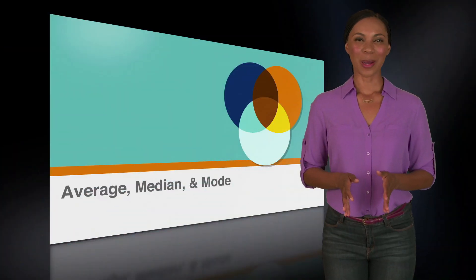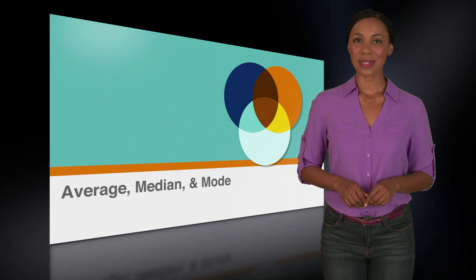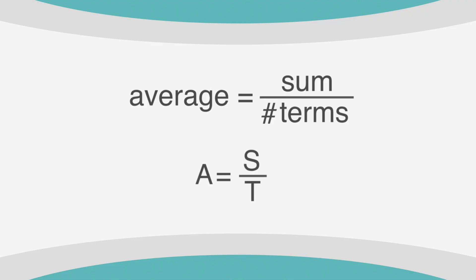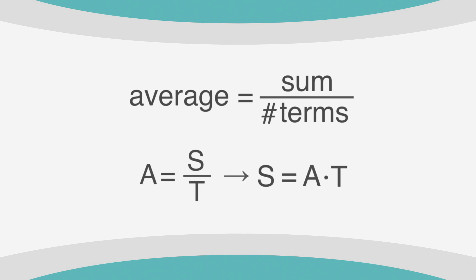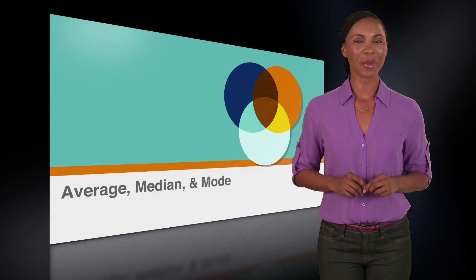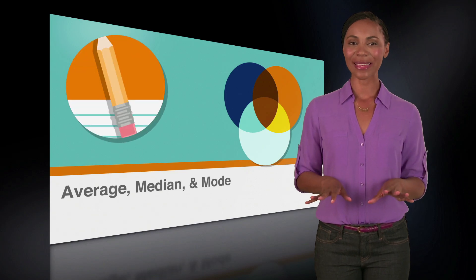To solve SAT problems, we use the formula average equals sum divided by number of terms. There's a handy trick for algebra average word problems: using the variable a for average, s for sum, and t for number of terms, we can rearrange the equation from a equals s over t to s equals a times t — or SAT — a mnemonic device to remember the formula. Let's apply this formula to a sample test problem. This will be a pause-and-solve problem where you work it out on your own before we go through it together.